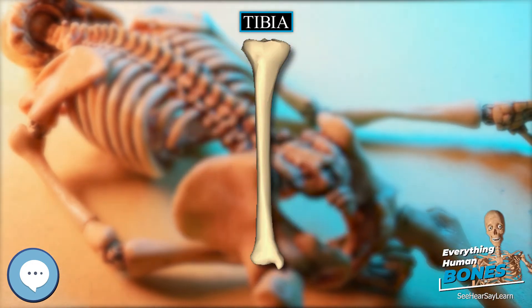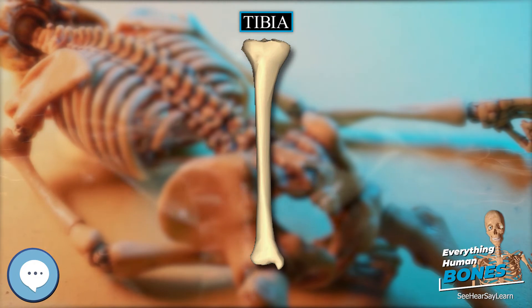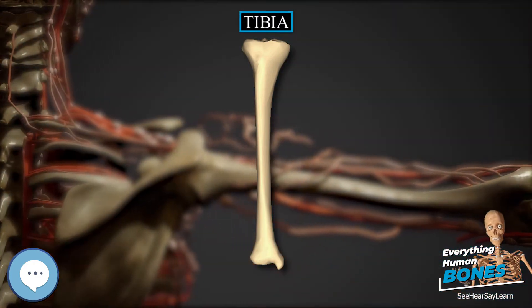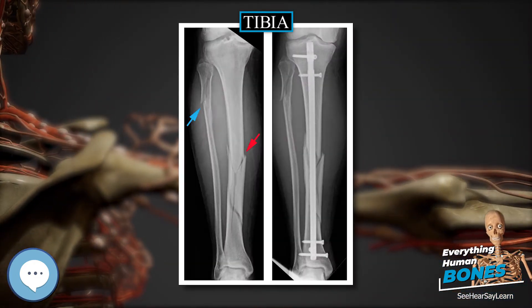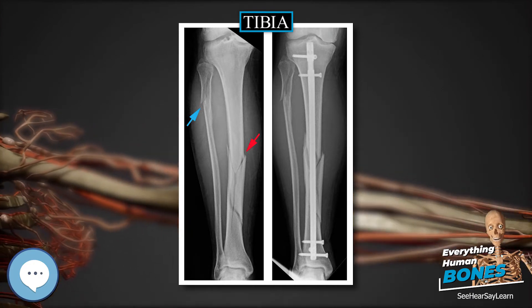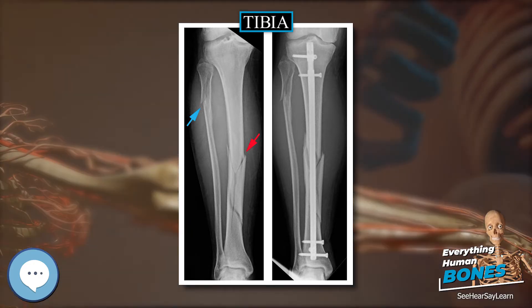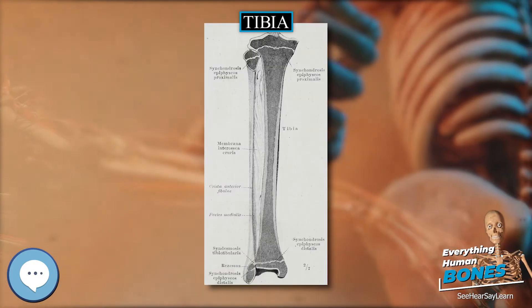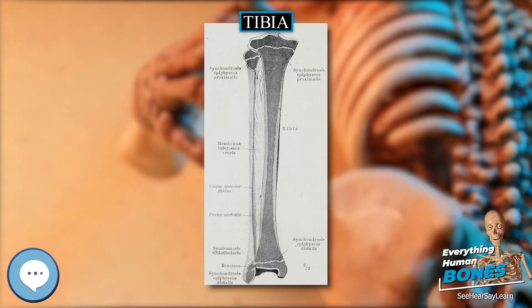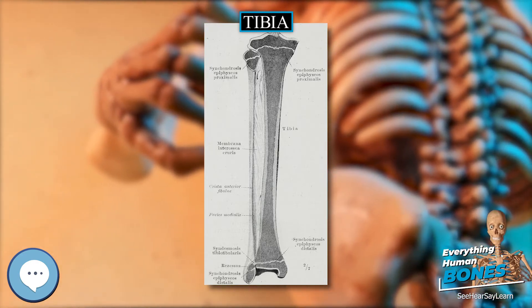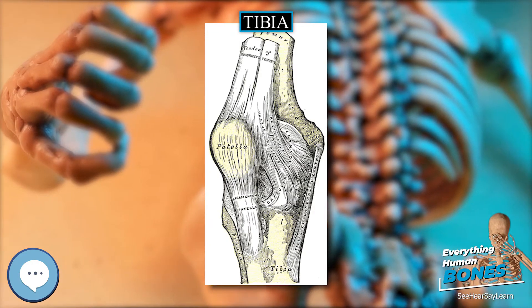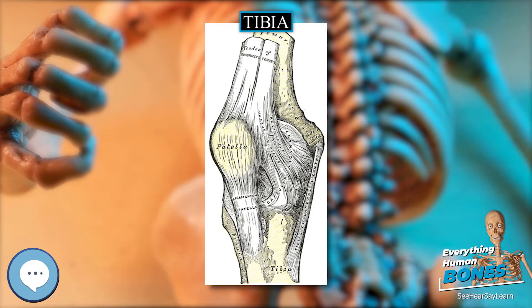Borders. The anterior crest or border, the most prominent of the three, commences above at the tuberosity, and ends below at the anterior margin of the medial malleolus. It is sinuous and prominent in the upper two-thirds of its extent, but smooth and rounded below; it gives attachment to the deep fascia of the leg.